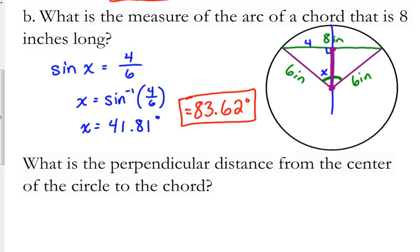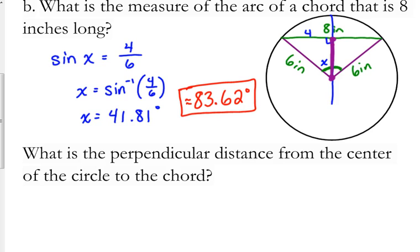Pythagorean theorem. You could use some trig. You could do cosine if you wanted to do trig. Or, we can do Pythagorean theorem. So, the hypotenuse is 6. One of the legs is 4. We're looking for the, I'm going to call it P, since it's a perpendicular distance.